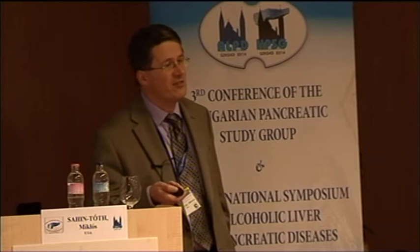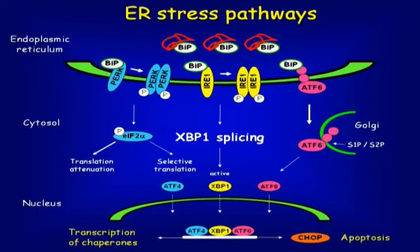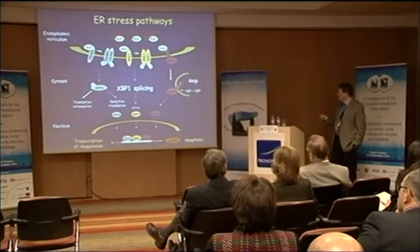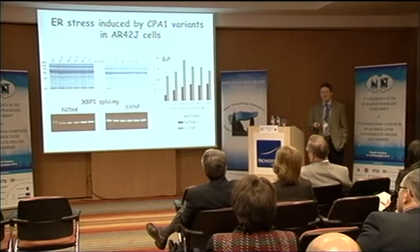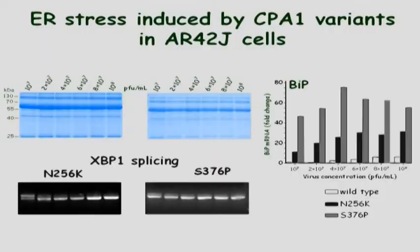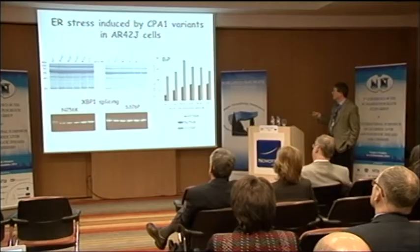We're not really sure why and how ER stress would result in pancreatic pathology. There are a number of theories — maybe increased cell death or increased cell injury — but just as we don't know how trypsin acts downstream, we don't know how ER stress might act downstream. As an example, we put in two CPA1 variations and measured BIP as one of the easily measurable ER stress markers.